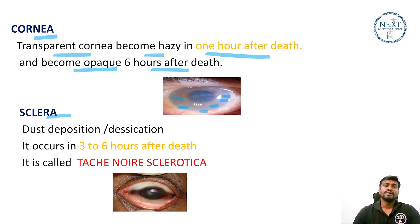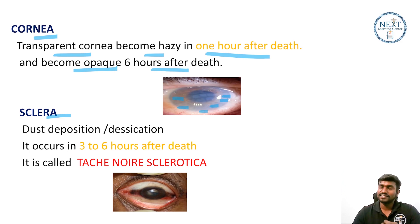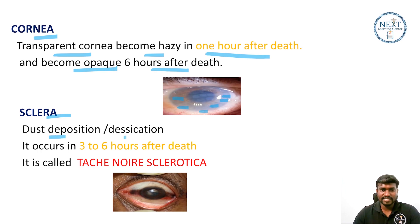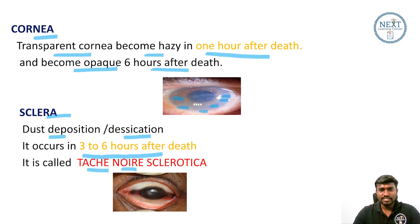Sclera: there is a saying — 'the rest is rust and we are the star dust.' Remember, in front of the universe we are all dust. In the sclera we will see dust deposition or desiccation. This occurs three to six hours after death and it is called tache noire sclerotica. In French, 'noir' means black color.